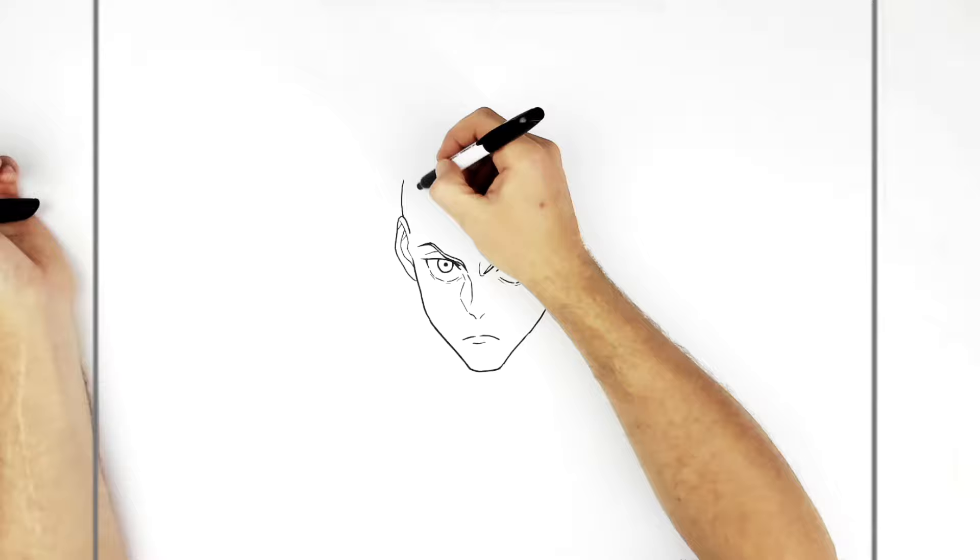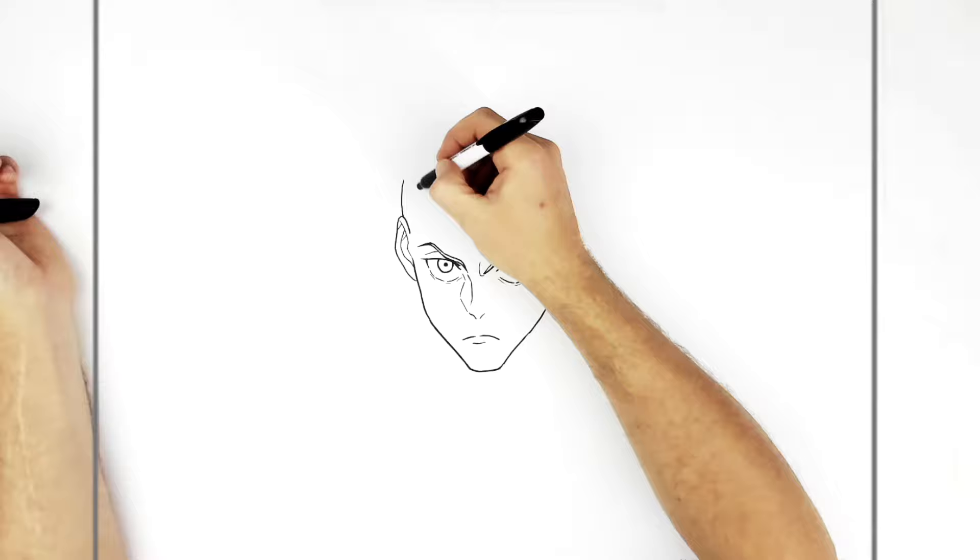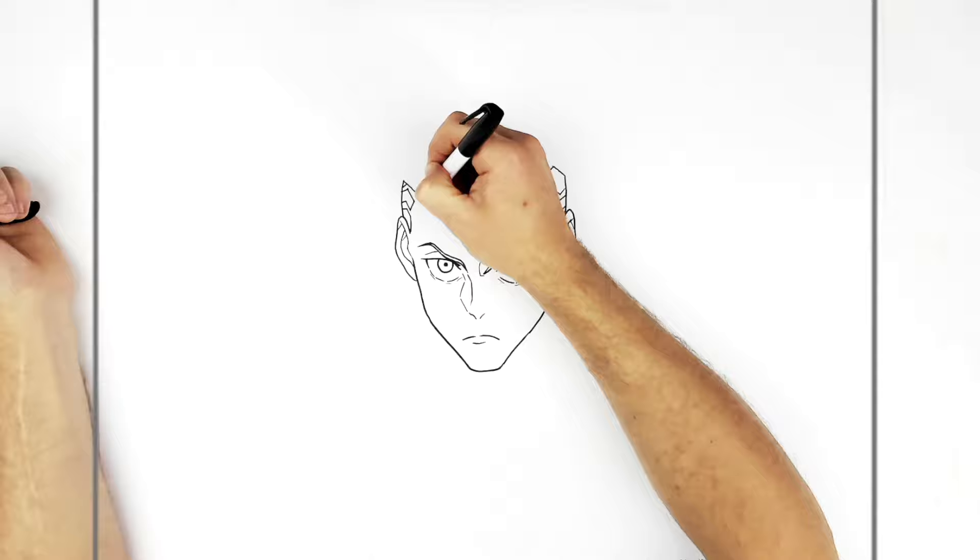So that's his hairline, same thing kind of on this side, these are smaller because it looks like we're in a bit of a three-quarter pose, so this side of his head is like slightly smaller, but you just do three of them again. And this one goes underneath his hairline.